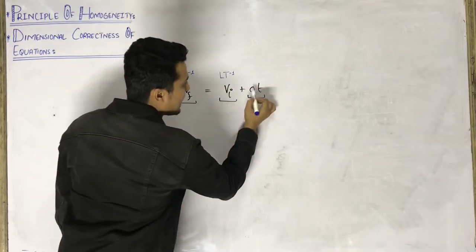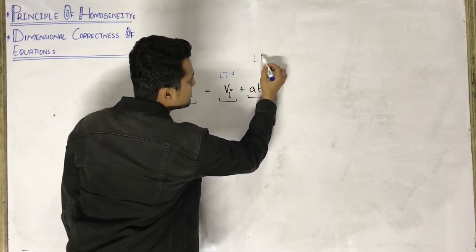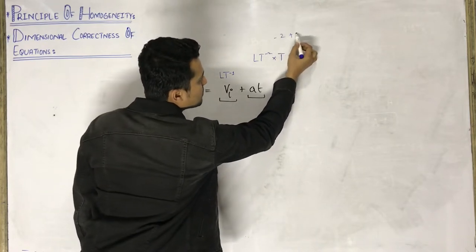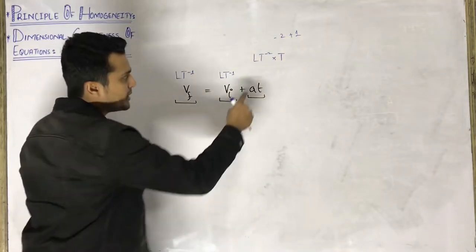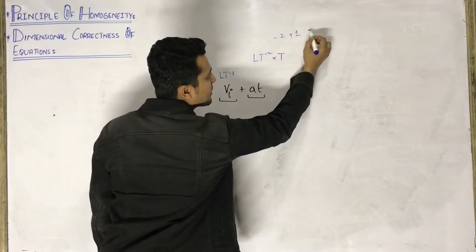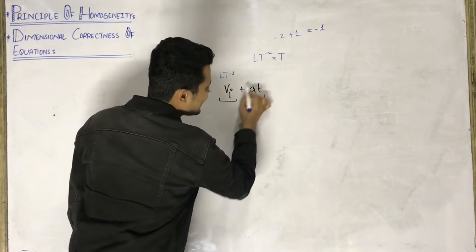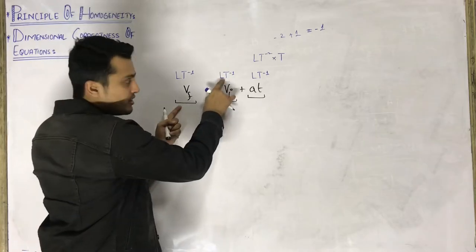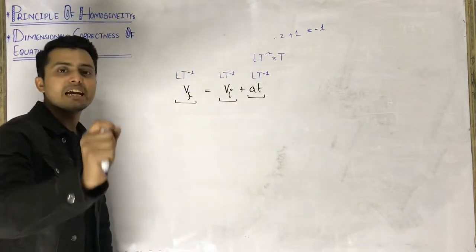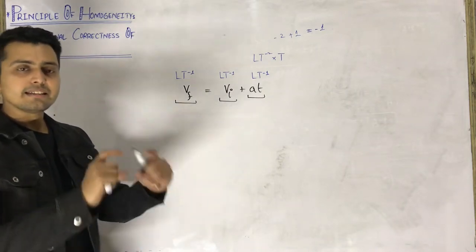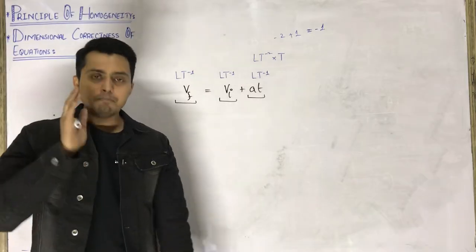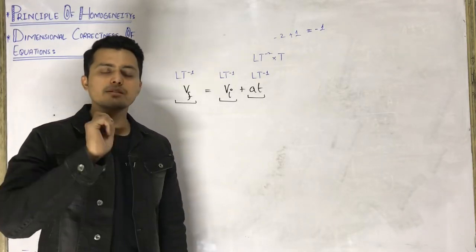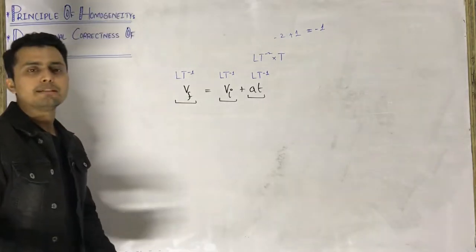Let me apply this principle to verify. The dimension of acceleration is LT⁻², and the dimension of time is T. So the dimension of 'at' = LT⁻² × T = LT⁻¹. This is the same as the dimension of velocity (LT⁻¹). So all three terms — vf, vi, and at — have exactly the same dimension LT⁻¹. This is called the principle of homogeneity.